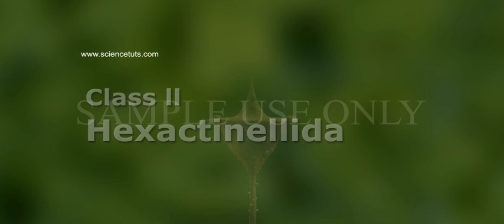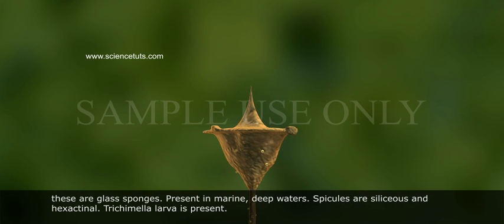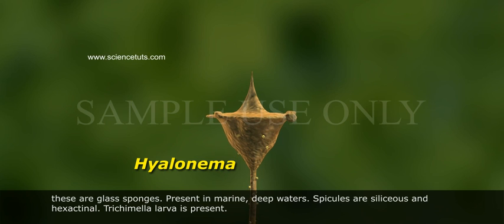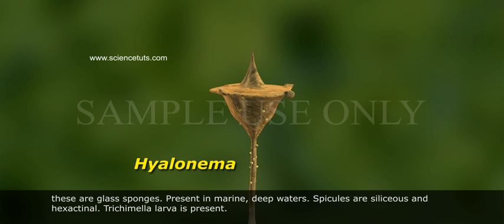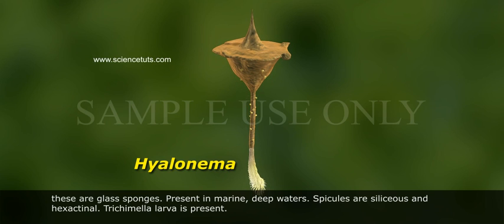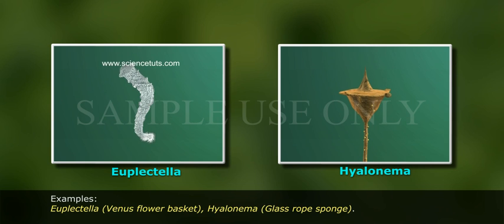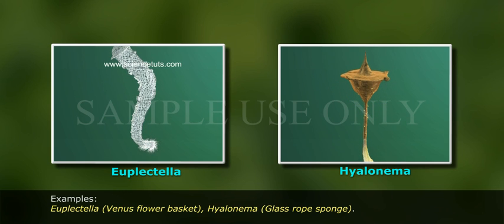Class 2: Hexactinellida. These are Glass Sponges, present in marine deep waters. Spicules are siliceous and hexactinal. Trichimella larva is present. Examples: Euplectella (Venus flower basket), Hyalonema (Glass rope sponge).